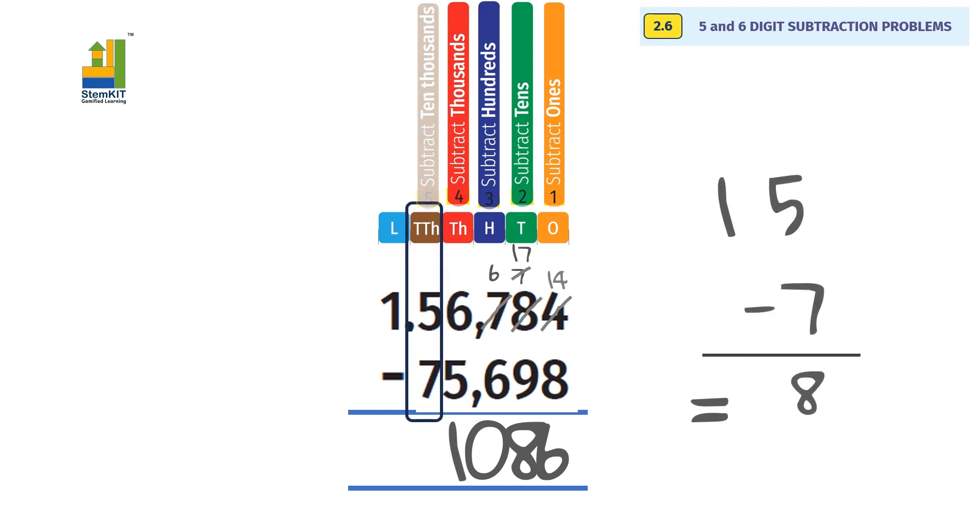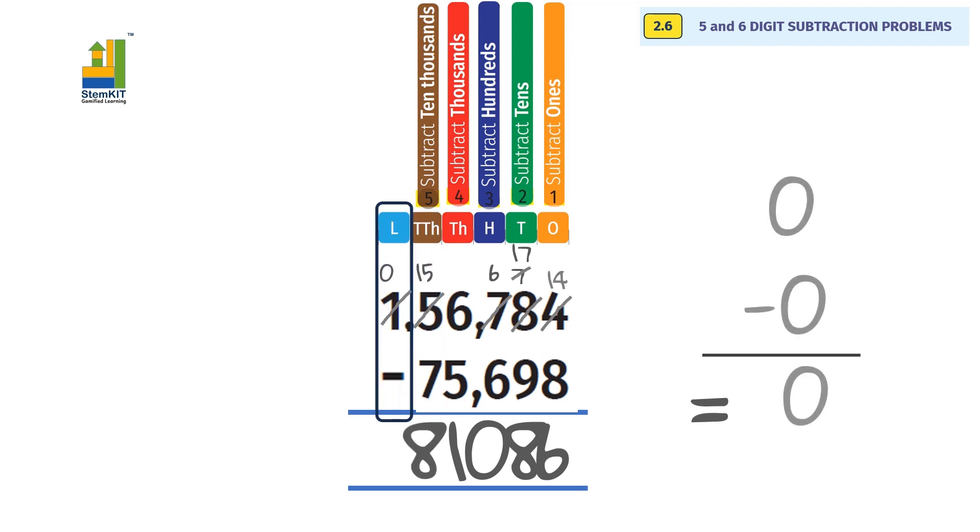Subtracting ten thousands: 5 minus 7 not possible. Borrow 1 from lakhs. 15 minus 7 equals 8. 1 in lakhs place becomes 0.